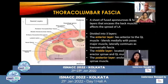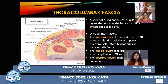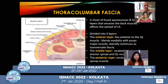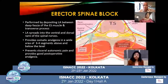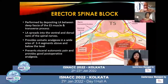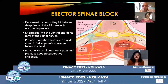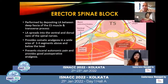The medial layer is located between the erector spinae and quadratus lumborum muscle, while the posterior layer encloses the erector spinae muscle. The erector spinae block can be performed by depositing local anesthetic between the deep fascia of the erector spinae muscle and the transverse process.